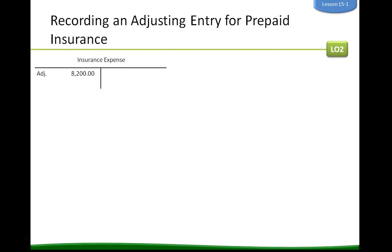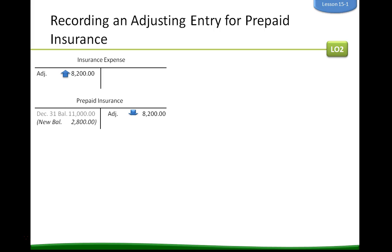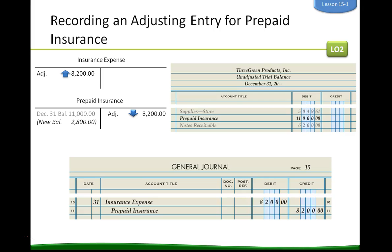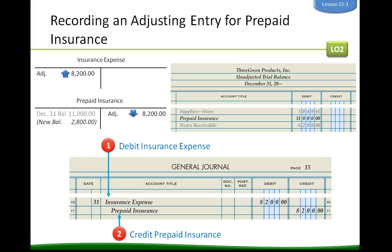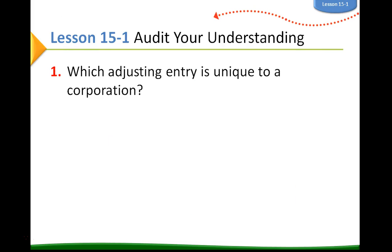Looking at the T-accounts, we debit insurance expense and credit prepaid insurance, giving us a new correct balance. Then we write it down in the journal: debit insurance expense and credit prepaid insurance.